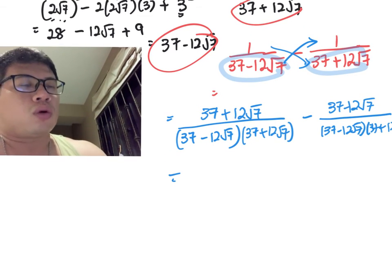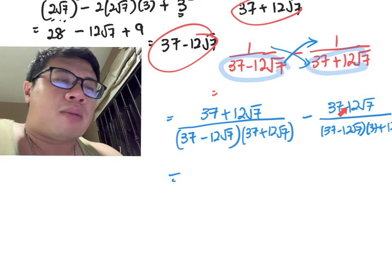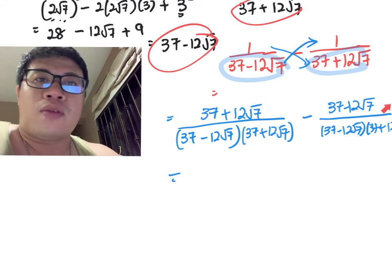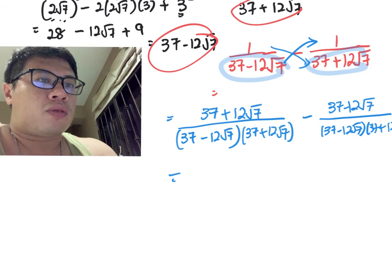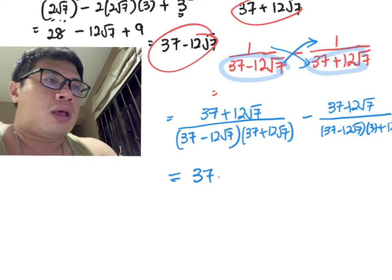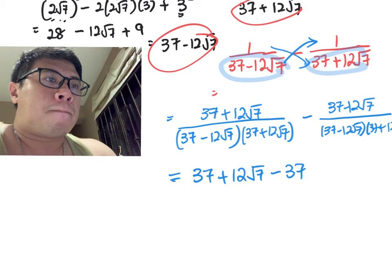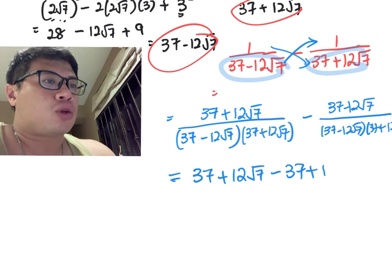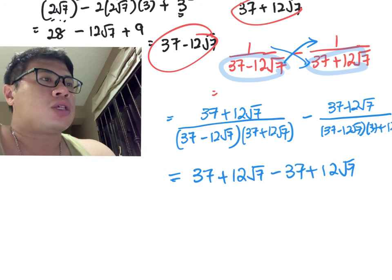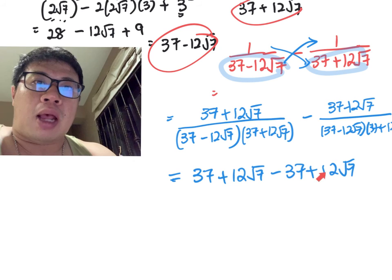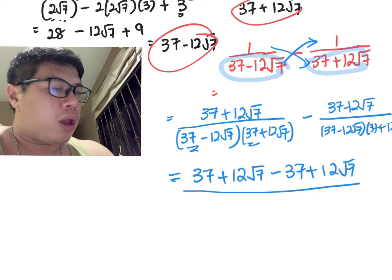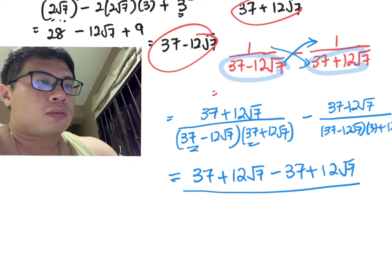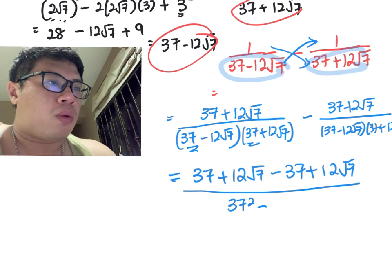Just take note: if you have a minus and a minus, every fraction has an invisible bracket, so don't make the mistake of keeping this as a minus again. So you have 37 + 12√7 - (37 - 12√7), which becomes minus 37 plus 12√7 because minus minus becomes plus. The denominator is a² - b², which is 37² - (12√7)².